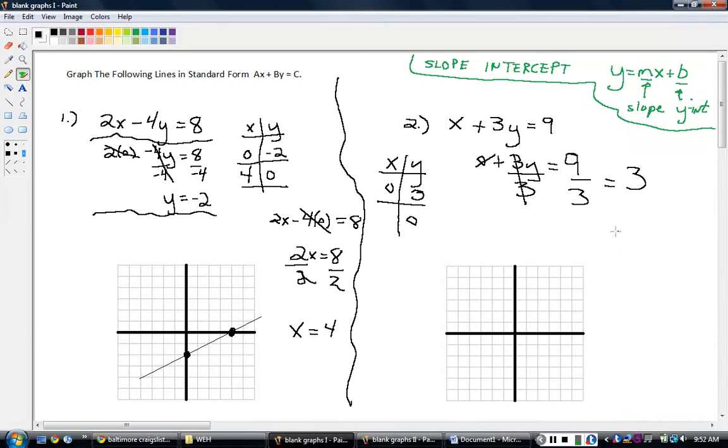That goes here. Now I do it all over again, I plug in 0 for y. x plus 3 times 0 equals 9. That's gone, and this leaves me with x equals 9. So that's over here: 0, 3 and 9, 0.